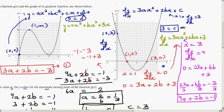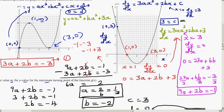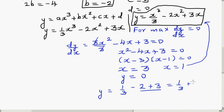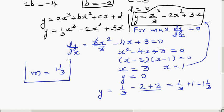From the graph, x = 3 corresponds to the minimum at (3, 0), and x = 1 is the maximum. To find m, substitute x = 1 into the equation: y = 1/3 − 2 + 3 = 1/3 + 1 = 1 and 1/3. So the value of m is 1⅓.